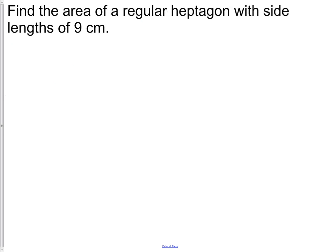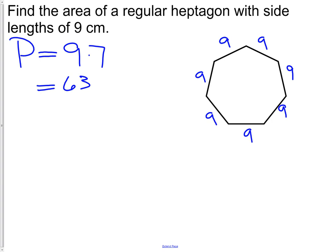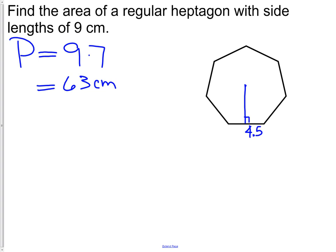Next: find the area of a regular heptagon with side lengths of nine centimeters. A heptagon has seven sides. Since it's regular, all sides are nine. The perimeter is 9 times 7, which equals 63. What we don't know is the length of the apothem. To find the apothem, we go from the center of the shape perpendicular to a side. We know that the half-side length is 4.5.